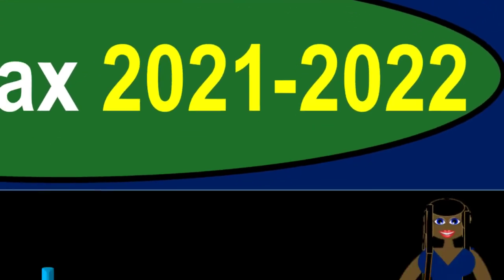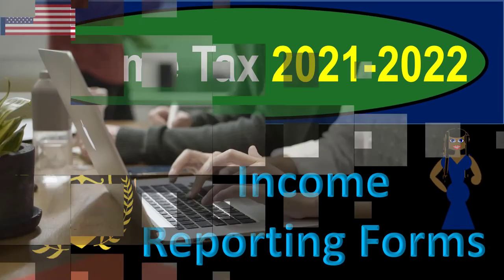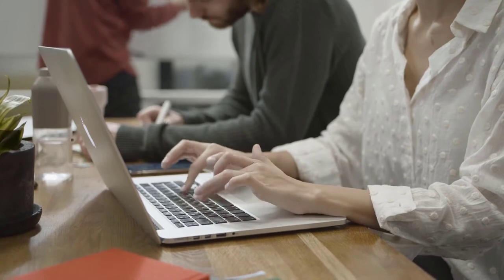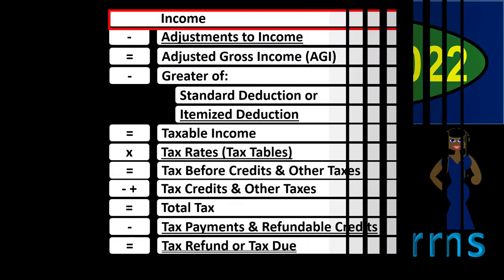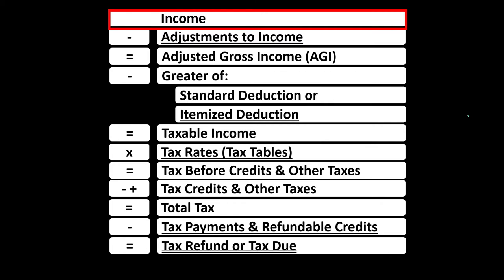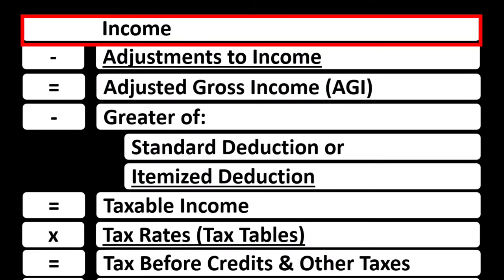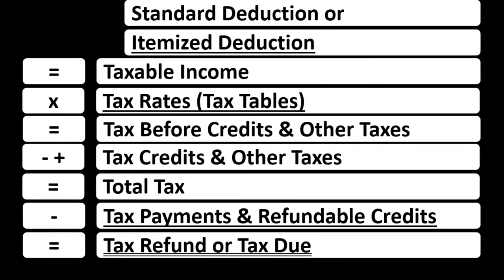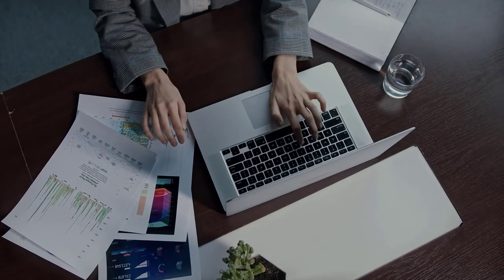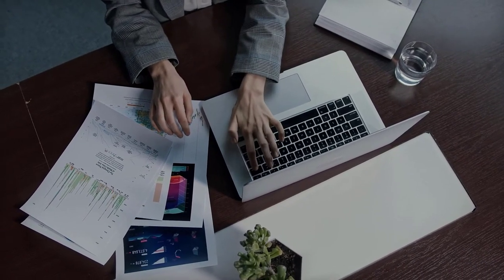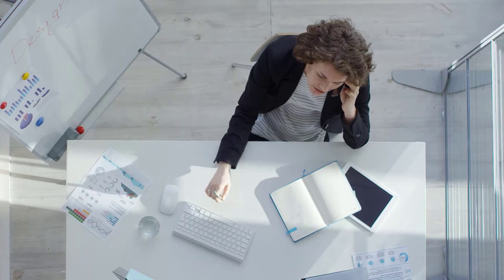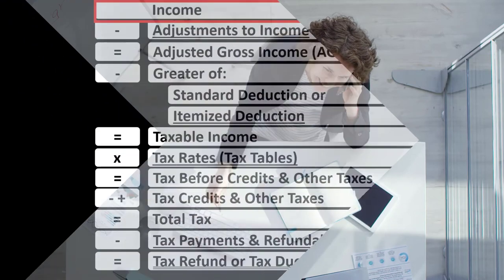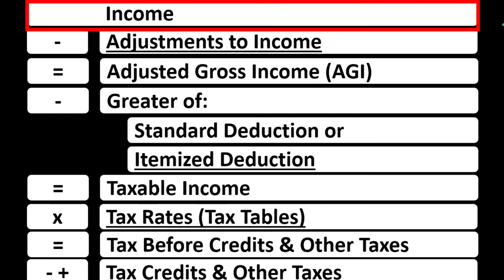Welcome to income tax 2021-2022 income reporting forms — get ready to maximize your refunds. Within the income tax formula, we're at the top line, the income line, which can look deceptively simple. But think of it like an Excel worksheet summary sheet with other sheets feeding into it, or as the first page of the 1040 with other forms flowing in — like Schedule 1, Schedule C, Schedule D, and so on — so it can be quite complex.